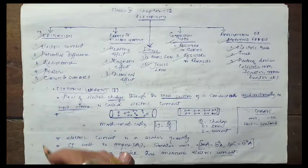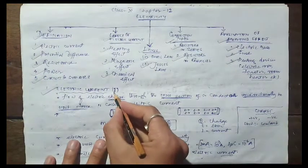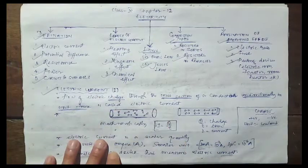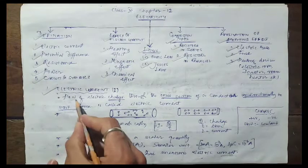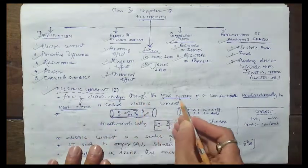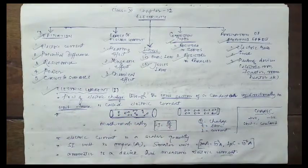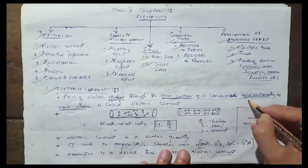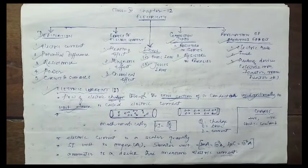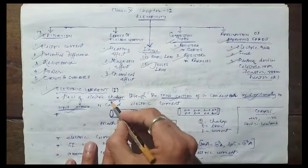The first definition is about electric current. The symbol 'I' stands for electric current. What is electric current? Flow of electric charge through the cross-section of a conductor, unidirectionally, in unit time is called electric current.